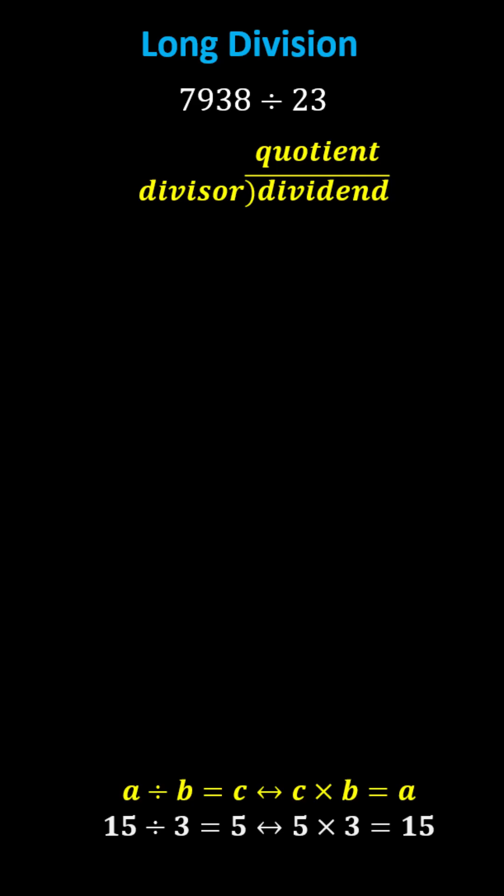In this lesson, we will divide 7,938 by 23 using long division. Let's first set this up in long division form, where we have the dividend of 7,938, and then divided by the divisor of 23.